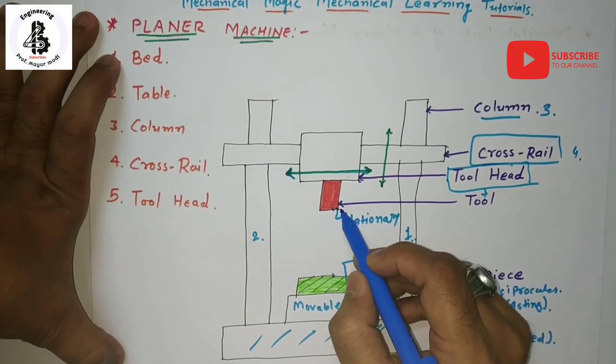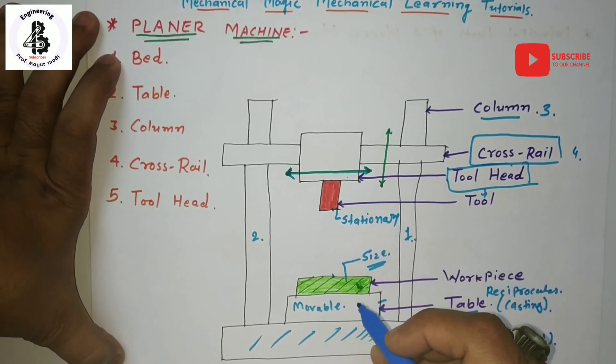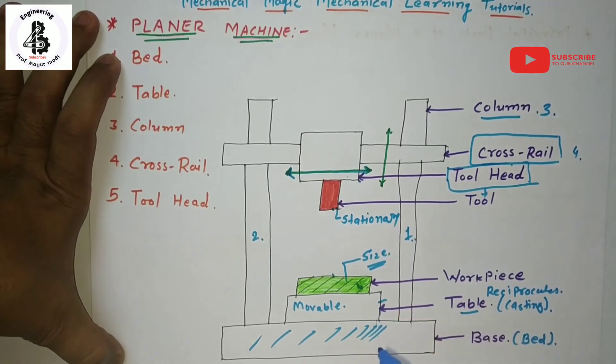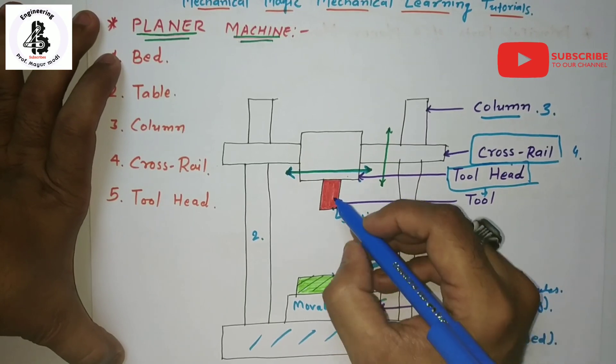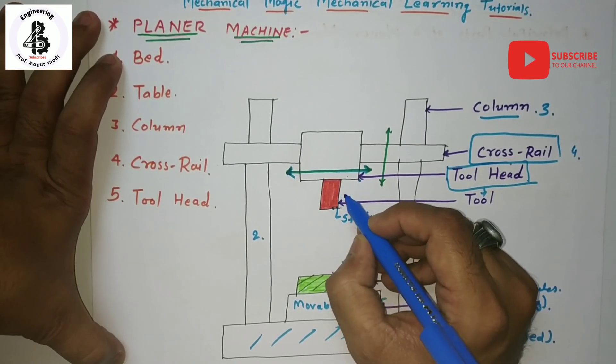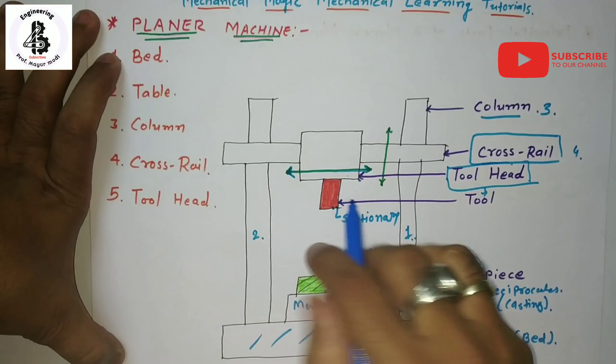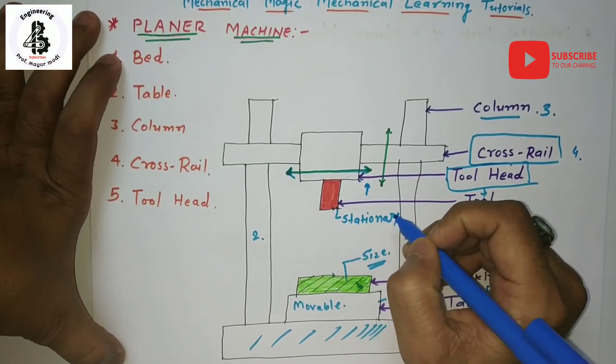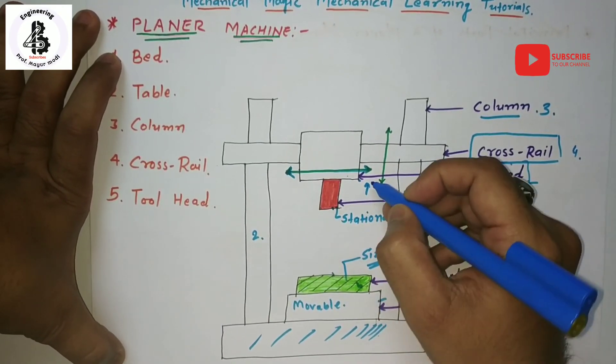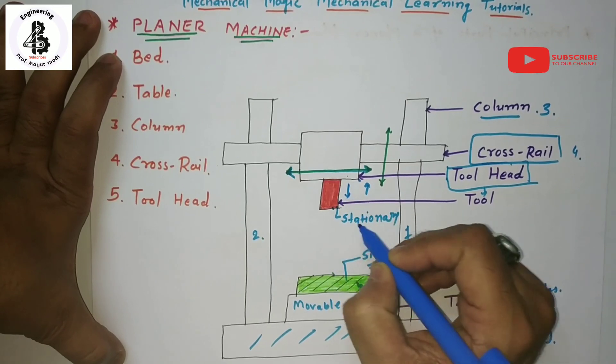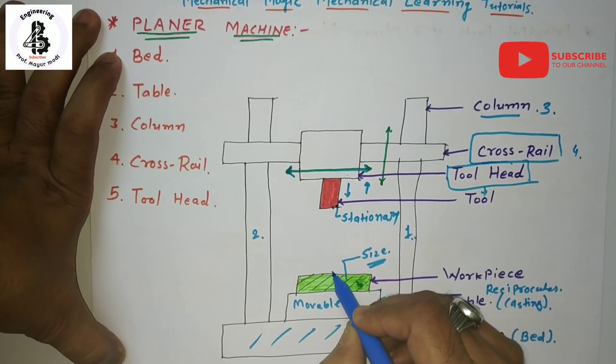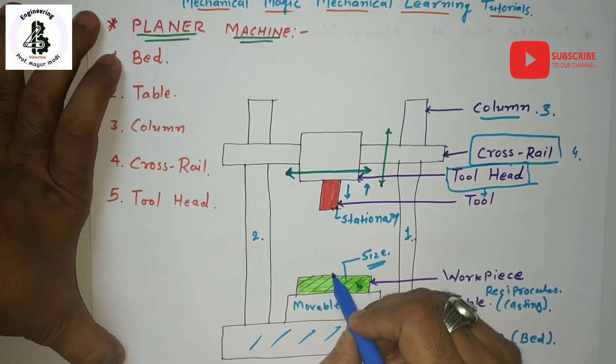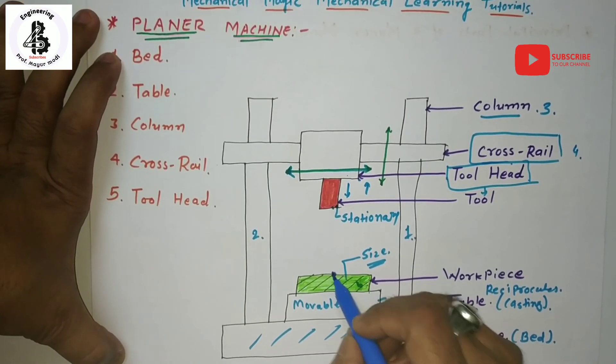During the return stroke, the tool is lifted. Material removal occurs only in the forward stroke and the return stroke of the workpiece disengages the tool. On the two columns, there will be upward motion, and once again for the forward stroke it will be in the downward direction and the tool will be in contact with the workpiece material. The planer machine is used for heavy jobs to make flat surfaces.